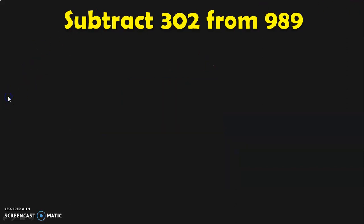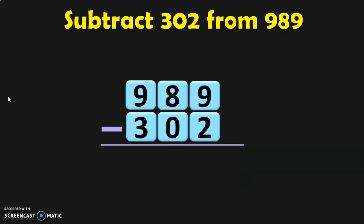Let us do the next sum: subtract 302 from 989. Again, we have two three-digit numbers, so write them one below the other, write down their place values, and begin subtraction from the ones place. In the ones place we have nine minus two. Nine in the mind, two in the fingers — before nine: eight, seven. The answer in the ones place is seven.